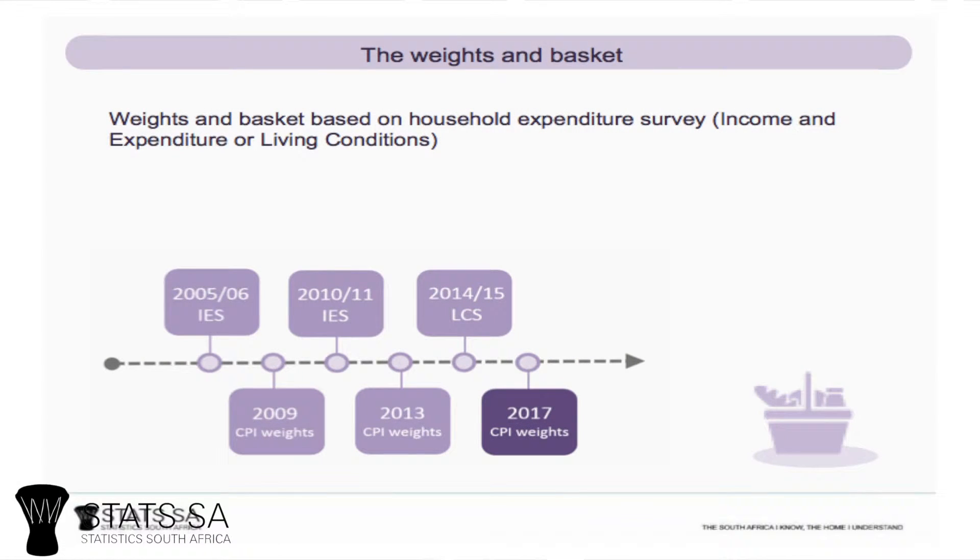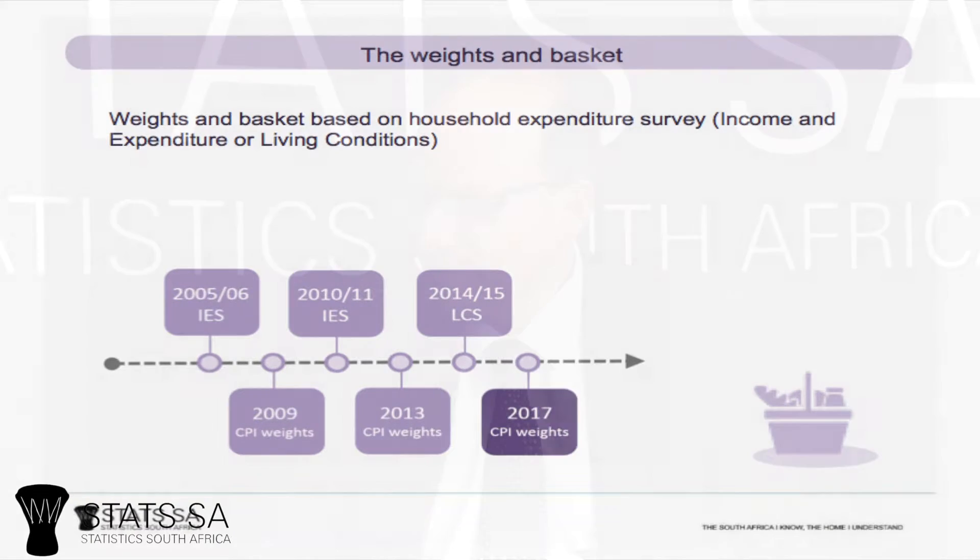How often do you update the basket and weights, and how is it done? International practice says you should do it at least every five years. The importance of changing them is that it allows you to adjust the CPI to changing consumer trends. When people change what they buy — due to income changes, new technological developments, or new products coming to market — you want to include those so that your CPI is relevant to normal consumers. We last updated the CPI weights and basket in 2013, which is well within the international standard.